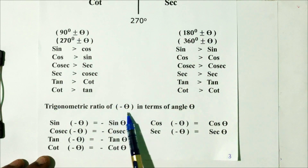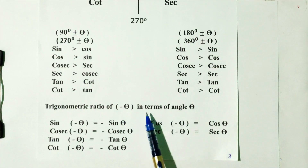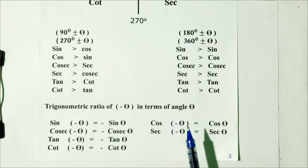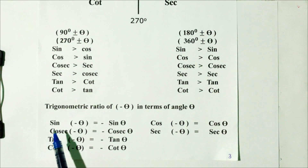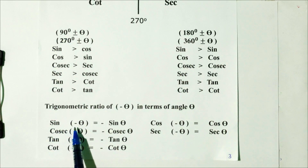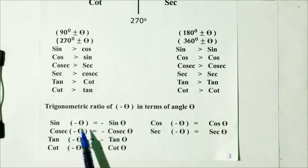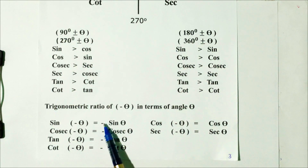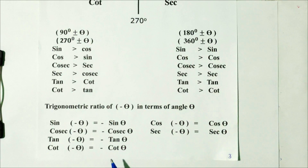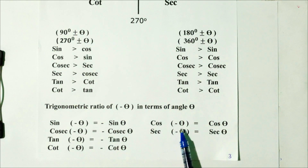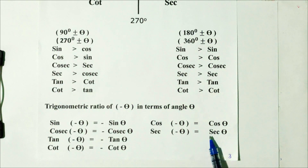Trigonometric ratios of minus theta in terms of angle theta: sin(−θ) = −sin θ, cos(−θ) = cos θ, tan(−θ) = −tan θ, cot(−θ) = −cot θ, sec(−θ) = sec θ. These are very important formulas.